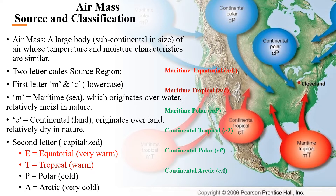Some air masses originate from the Arctic, very cold regions, and are designated A. If the source is land, the air mass will be dry, and the lowercase first letter of the code would be C for continental, preceding the P or T. If the air mass originates over the ocean, it would be moist at least in the lower layers, and the lowercase letter would be M for maritime.